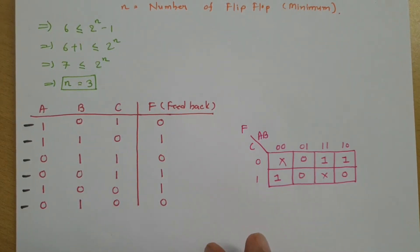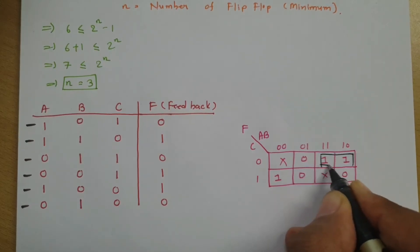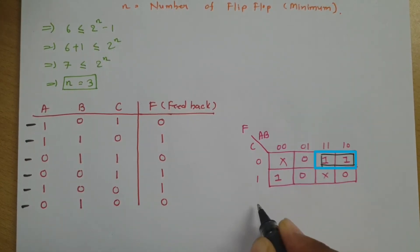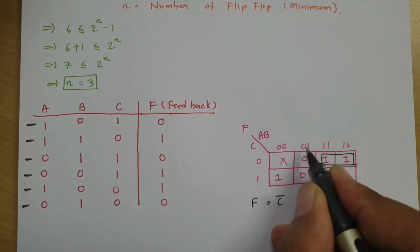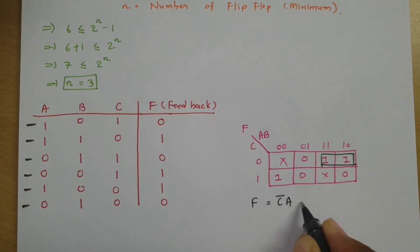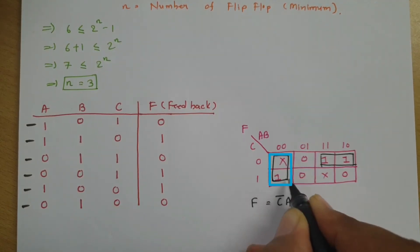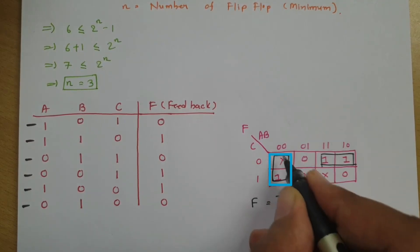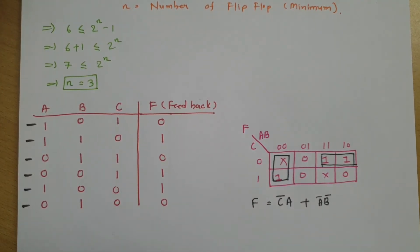Now we need to simplify the feedback f using a K-map. Considering one group that covers two 1s, a is common and c̄ is the other factor, giving c̄a. To cover the remaining 1, we consider another group giving āb̄. So the simplified feedback is f = c̄a + āb̄.